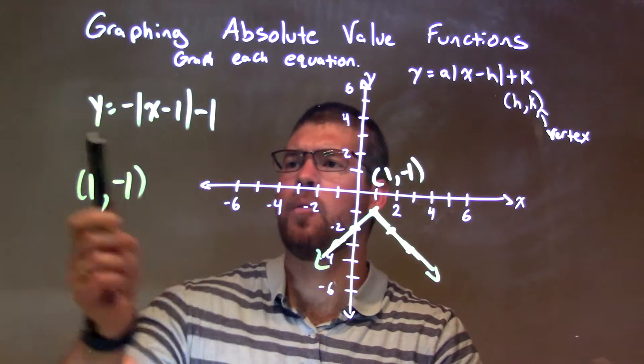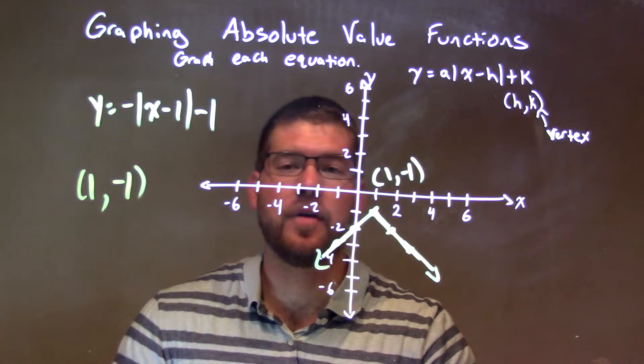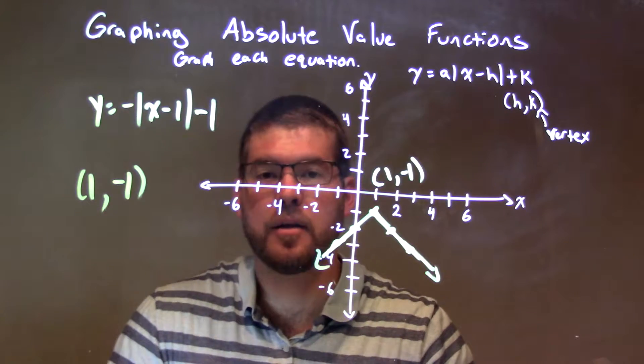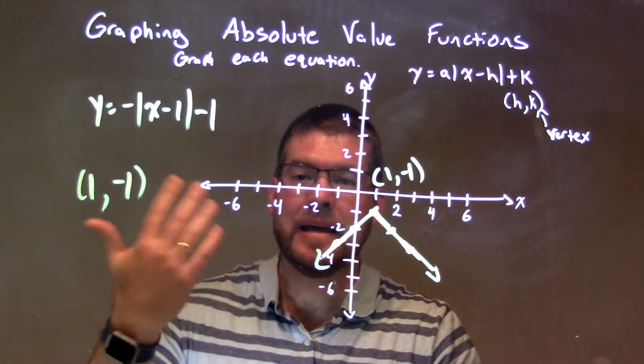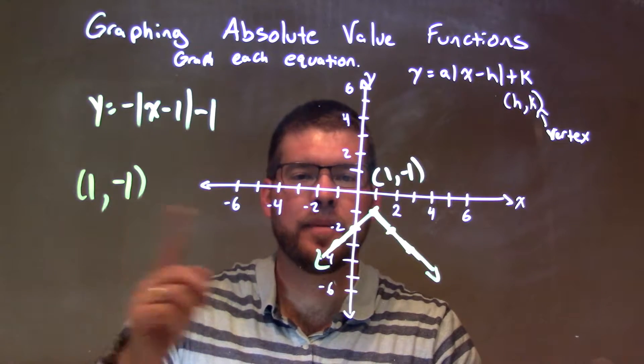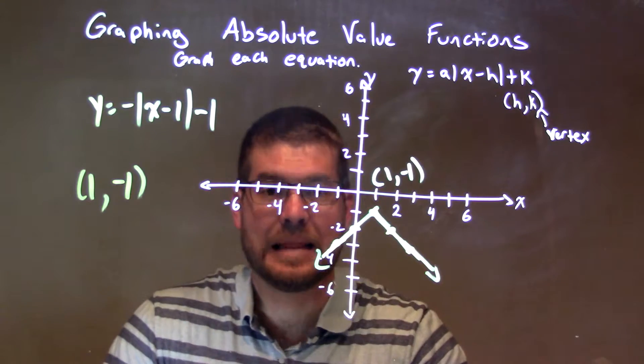Quick recap. We're given y equals negative absolute value of x minus 1, and then all subtracted by 1. That vertex, or that yields us a vertex of 1, comma, negative 1. So we put that vertex right there.